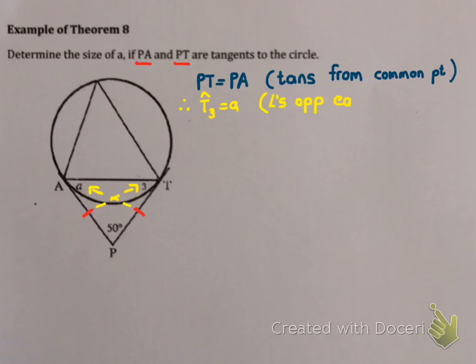And my reason is because they are angles opposite equal sides. Please note you cannot use the reason isosceles triangle, as that's not an acceptable reason in grade 11 and 12. Now this is perfect because I have a triangle. And angles in a triangle add to 180 degrees. So T3 plus A plus 50 will be 180.